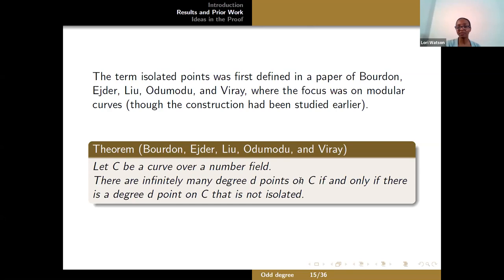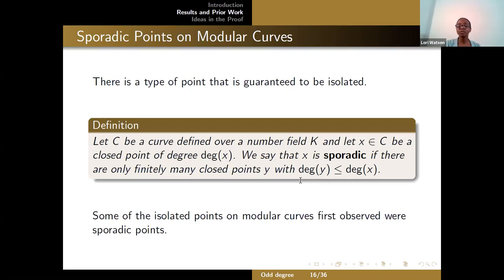One of the things they showed is that in order to have infinitely many degree d points on a curve C, there has to be at least one degree d point that's not isolated. But there's one type of point guaranteed to be isolated: if there are only finitely many points of degree ≤ d, then any point in degree d is isolated. We call such a point sporadic. Some of the first isolated points on modular curves that people found were actually sporadic points.